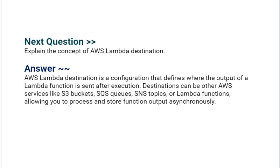Our next interview question is: explain the concept of AWS Lambda Destination. AWS Lambda Destination is a configuration that defines where the output of a Lambda function is sent after execution. Destinations can be other AWS services like S3 buckets, SQS queues, SNS topics, or Lambda functions, allowing you to process and store function output asynchronously.